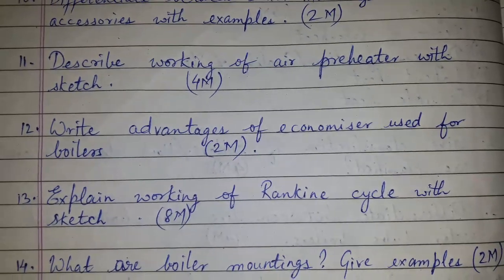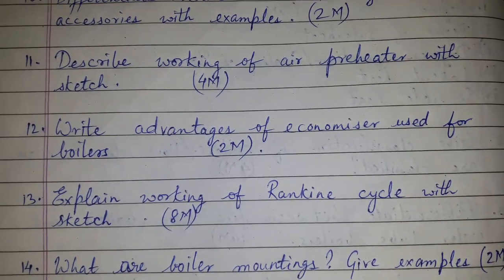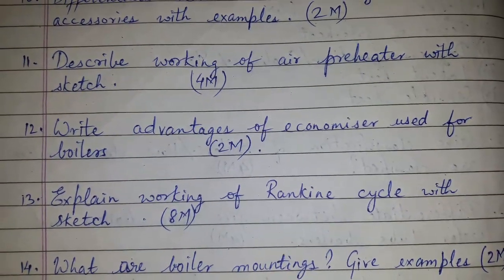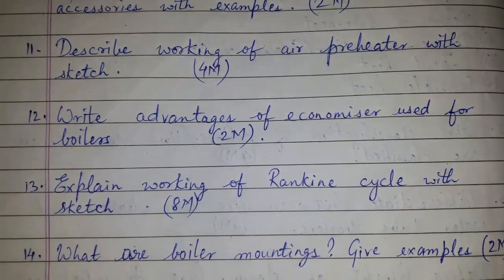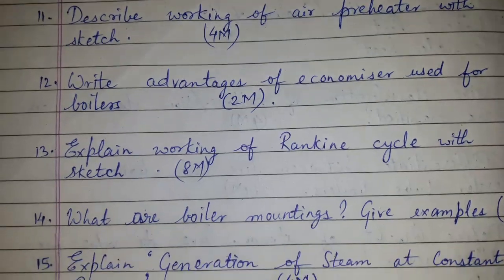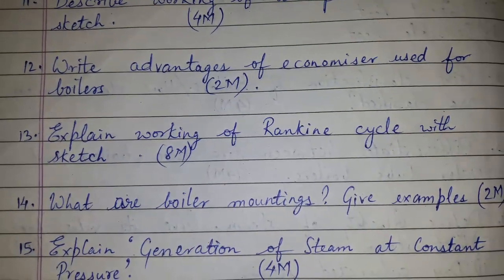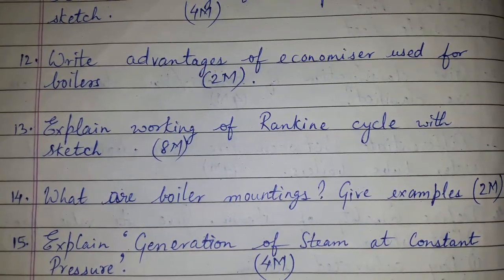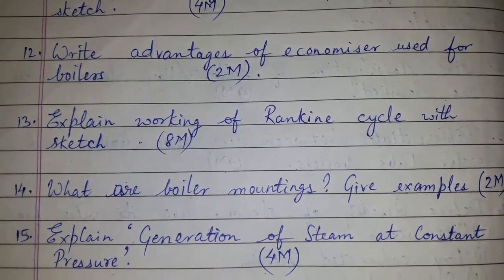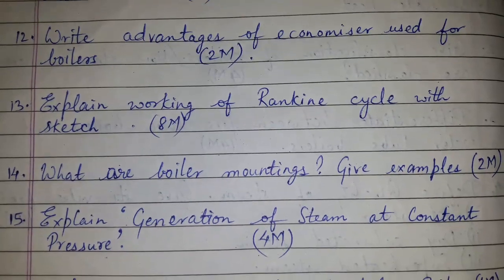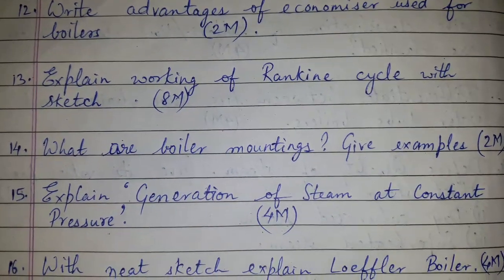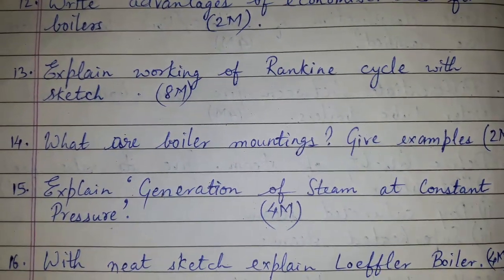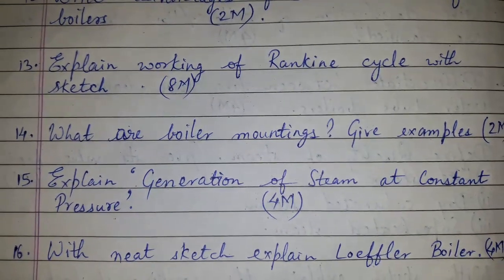Question 11: Describe the working of an air preheater with sketch for 4 marks. Write advantages of an economizer used for boilers for 2 marks. Explain the working of the Rankine cycle with sketch for 8 marks.